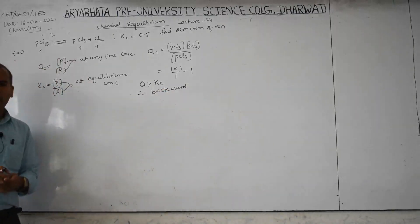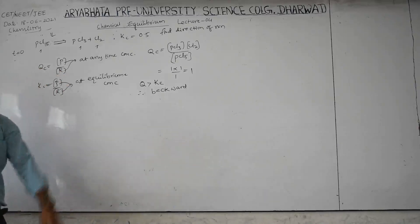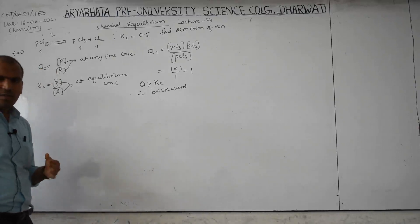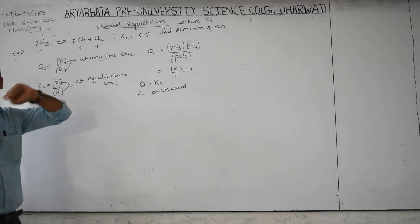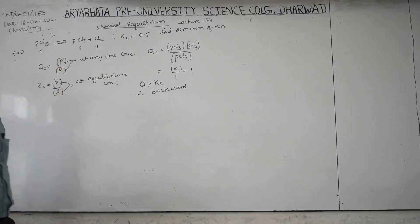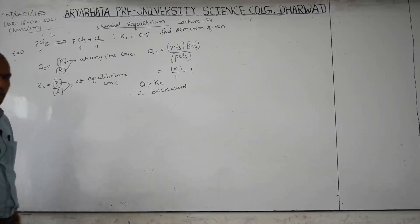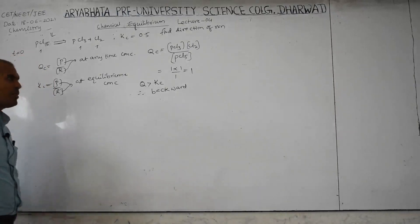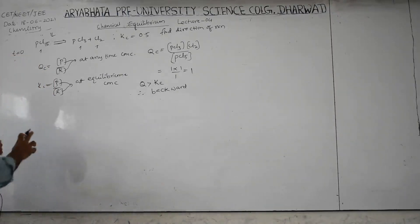In examinations, simple values like these are rarely given — they usually have decimal values requiring multiplication or division where calculation mistakes can occur. So be very careful with your calculations. Based on this concept, direction-of-reaction questions may be asked in various forms.